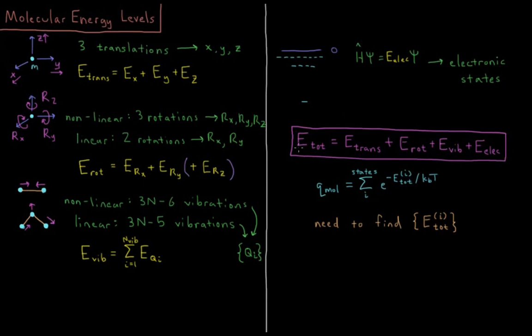So the total energy then is the sum of all of these contributions. It's the sum of the translations, displacement through space, rotations, spinning around the axes, vibrations, displacing within the molecule, and the electronic energy, the energy relative to the molecule being dissociated into atoms or the atom being dissociated into a nucleus and electrons.